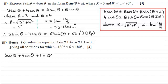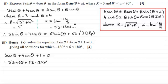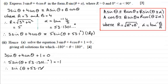Subtracting 1 from both sides gives 5·sin(θ + 53.1301...°) = −1. I'll use the unrounded value to avoid accuracy issues. Dividing both sides by 5 gives sin(θ + 53.1301...°) = −1/5 = −0.2. Now I need to take the inverse sine of both sides to find what θ + 53.1301° equals.